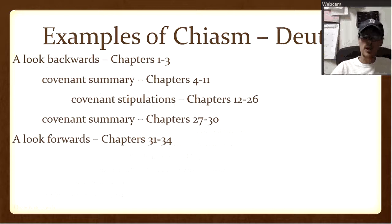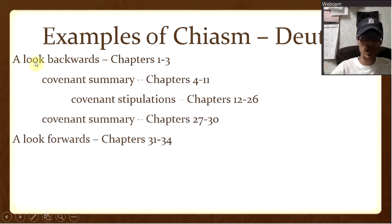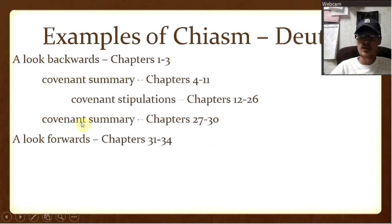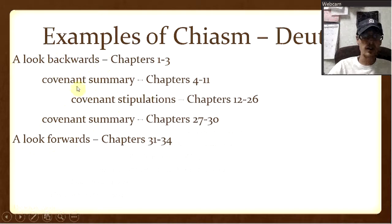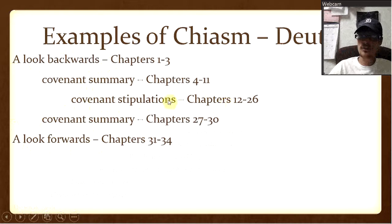Now let me show you another example from Deuteronomy. The book of Deuteronomy as a whole is one long chiasm. Chapters 1 through 3 look backwards; chapters 31 through 34 look forwards. Chapters 4 through 11 are a covenant summary; chapters 27 through 30 are also a covenant summary. Chapters 12 through 26 are the covenant stipulations — if you do this, this is going to happen. So that tells us the most important thing in Deuteronomy is that God is wanting their obedience. These are things that happened in the past, these are things that are happening, and right here are the stipulations: 'I want you to obey me, listen to my words, follow what I'm saying.'